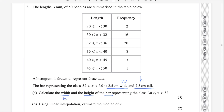In this question, we need to find the width and height of this class. First of all, you should know the class width and frequency density of each class. The class width is the difference of the lower and upper limit — we subtract the lower limit from the upper limit. 36 minus 32 gives class width as 4. And the class width of the class 30 to 32 is 32 minus 30, which is 2.